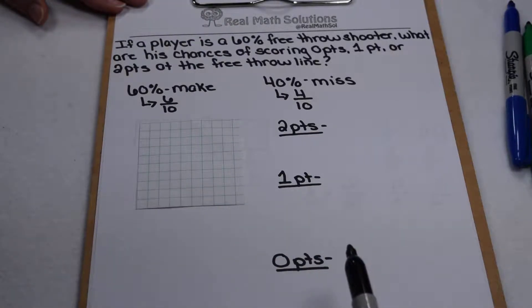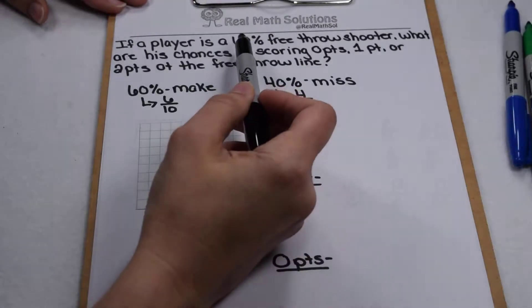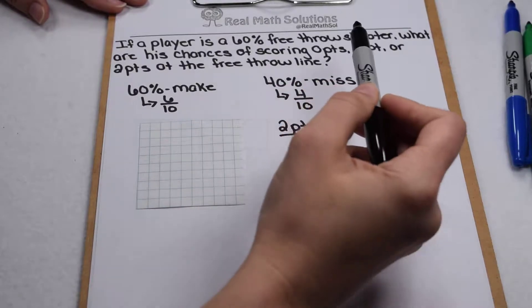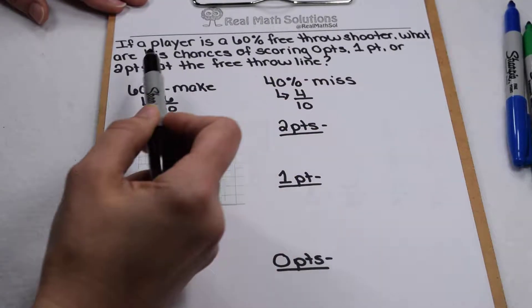With March Madness going on, we're watching a lot of different players have a chance to shoot free throws. What we want to know is if a player is a 60% free throw shooter and he goes to the foul line, what are his chances of scoring 0 points, 1 point, or 2 points?